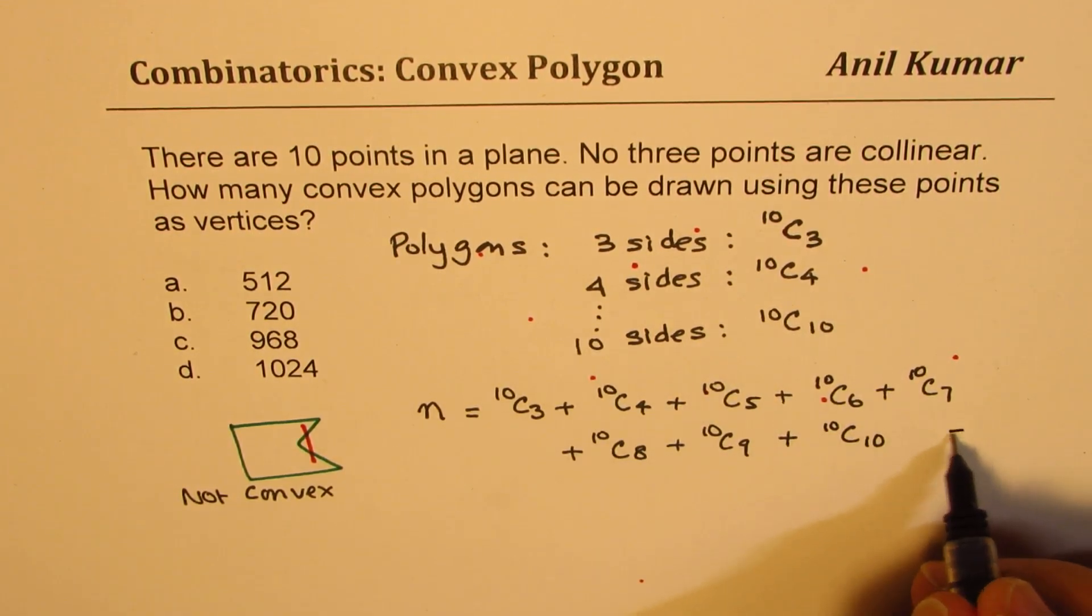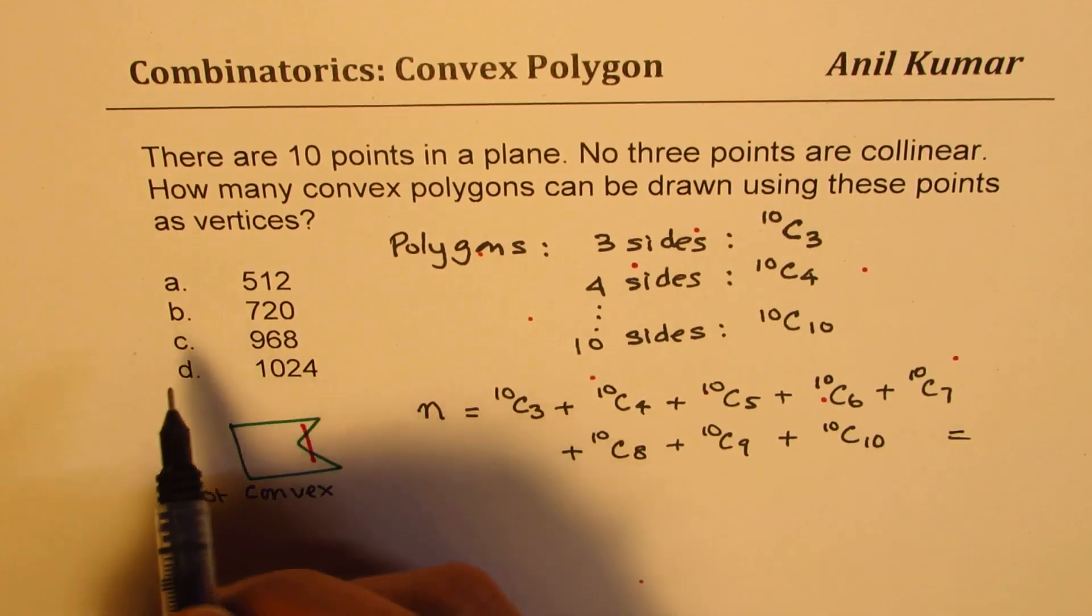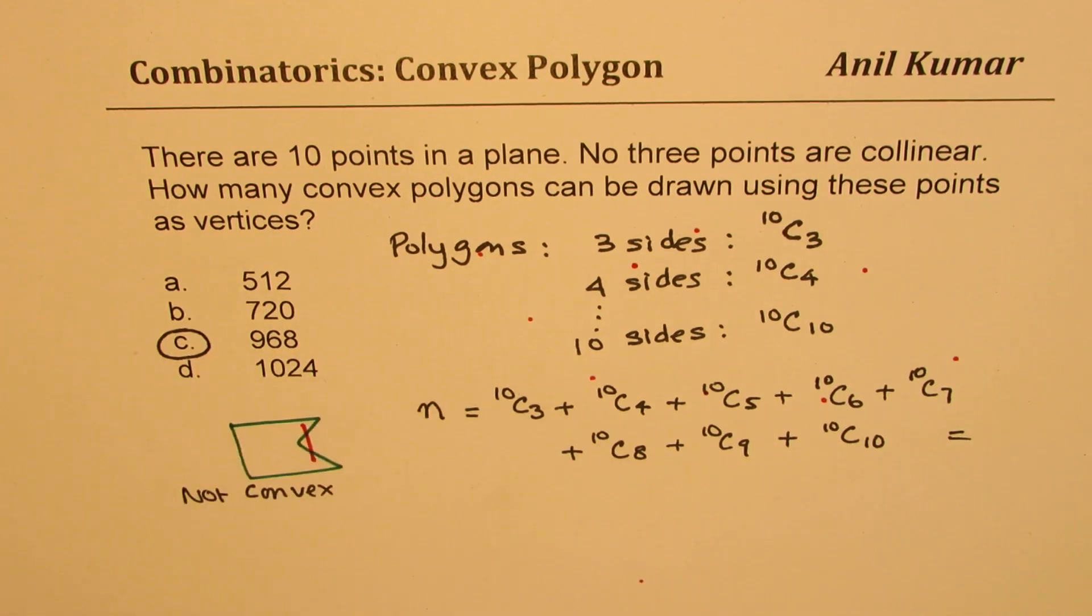Correct? So when you do all this, you'll get your answer, which will be what? Which will be 968, correct? So that is how you can actually solve this particular question.